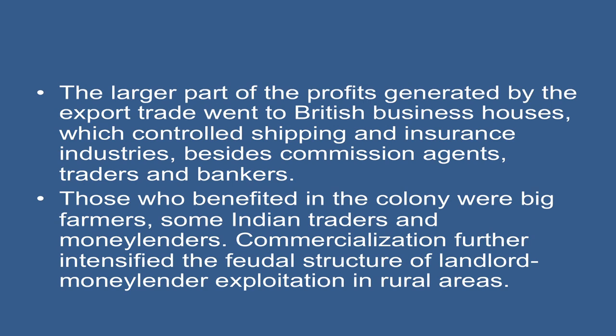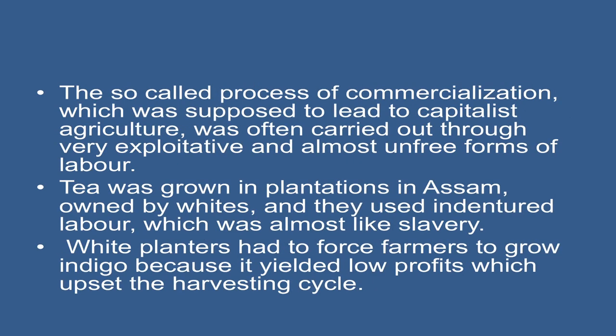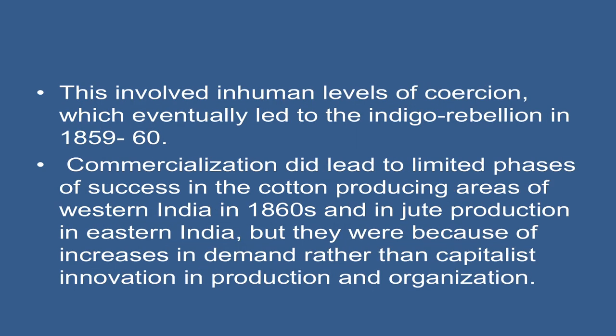The larger part of the profits generated by the export trade went to British houses which controlled businesses like shipping and insurance industries, besides commission agents, traders, and bankers. Those who benefited in the colony were big farmers, some Indian traders, and moneylenders. Commercialization further intensified the feudal structure of landlord-moneylender exploitation in rural areas. The so-called process of commercialization, which was supposed to lead to capitalist agriculture, was often carried out through very exploitative and almost unfree forms of labor. Tea was grown in plantations in Assam owned by whites, who used indentured labor which was almost like slavery. White planters had to force farmers to grow indigo because it yielded low profits, which upset the harvesting cycle, involving inhuman levels of coercion that eventually led to the Indigo Rebellion in 1859-60.